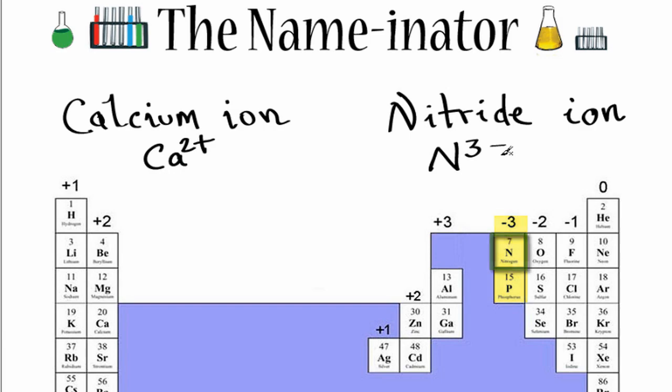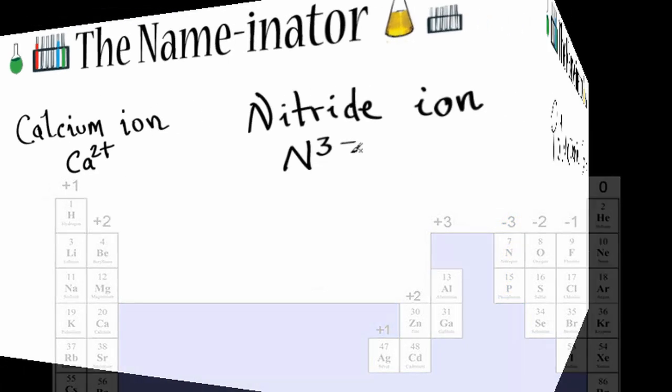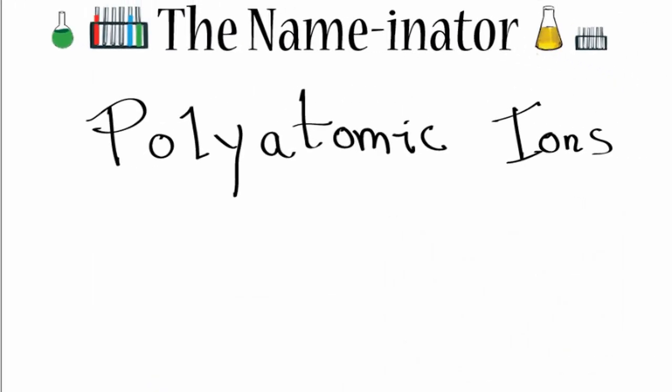Let's take a look now at the polyatomic ions. For polyatomic ions, the periodic table doesn't help us. You need to either memorize each of the polyatomic ions or look them up on a table of ions.